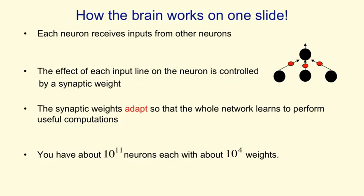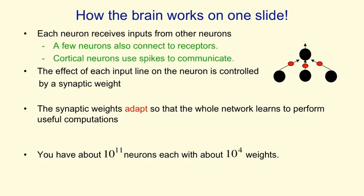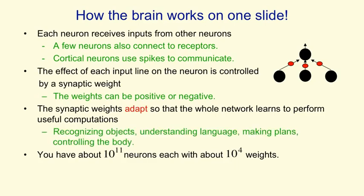All on one slide, this is how the brain works. Each neuron receives inputs from other neurons — a few receive inputs from the receptors, but only a small fraction. The neurons communicate with each other in the cortex by sending spikes of activity. The effect of an input line on a neuron is controlled by a synaptic weight, which can be positive or negative. These synaptic weights adapt, and by adapting these weights, the whole network learns to perform different kinds of computation — for example, recognizing objects, understanding language, making plans, and controlling the movements of your body.